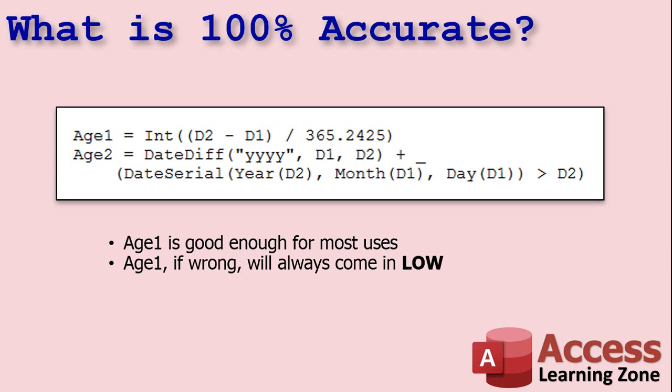So what is this 100% accurate calculation? There's Age One and Age Two, by two different methods. Age One is what I showed you in the original video: take Date Two, subtract Date One, and then divide that by 365.2425. That gives you the result that is 99.91% accurate, which personally I think is good enough for most uses.